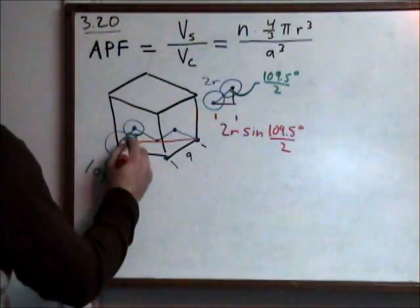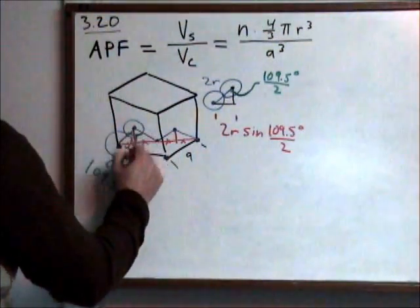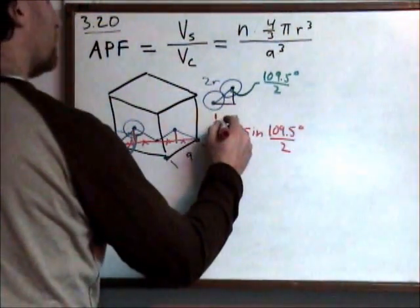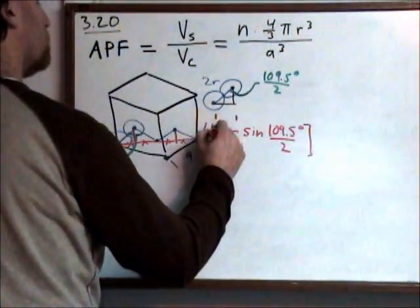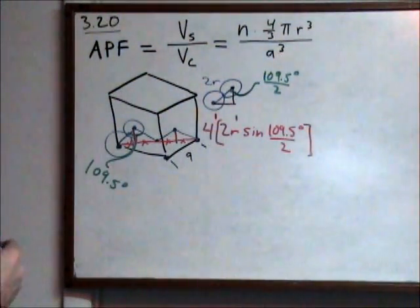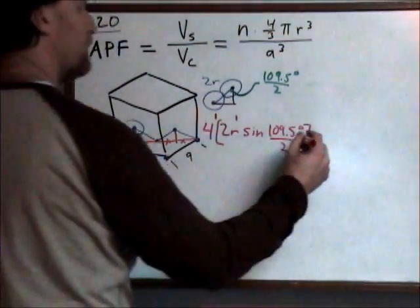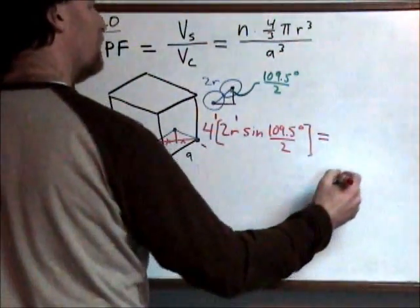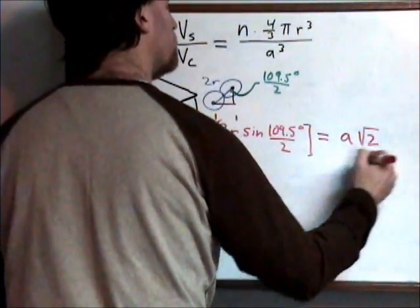And I've got 4 of them here: 1, 2, 3, 4, if I draw my verticals. So if I take this and multiply by 4, then I have the distance of my diagonal from point to point. And this will equal A times the square root of 2.